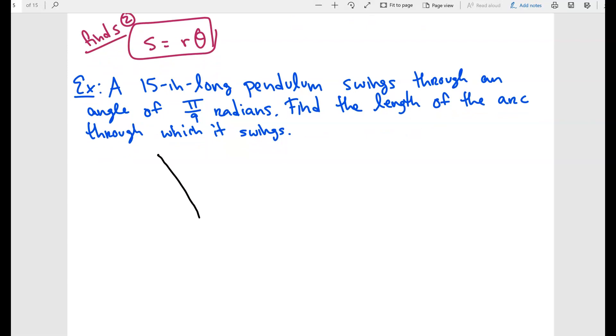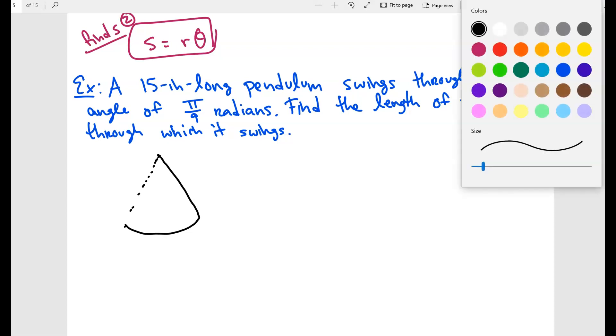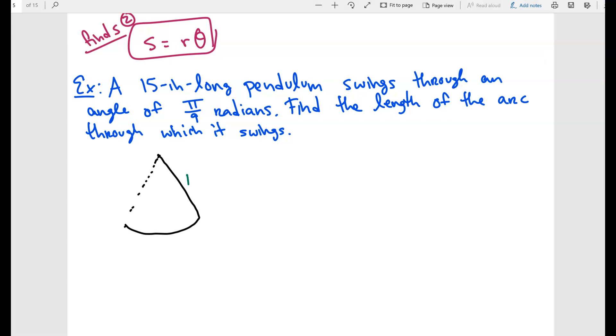So let's say you have this pendulum, and basically what it's doing is just swinging back and forth. So it's just swinging and when it swings, it's kind of making like this little thing. If I'm swinging it from one side to the other, this is kind of what it looks like. We know that this pendulum is 15 inches long. And basically the angle that it makes here is going to be π over 9.